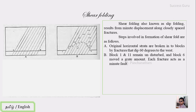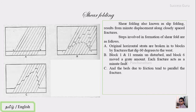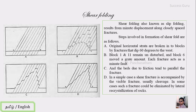This is a slipping process. The center block is displaced differently from the outer blocks. By adjusting the center block using the fracture plane, the result is a shear fold.